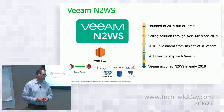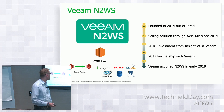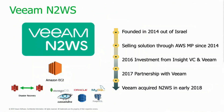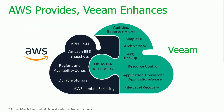N2WS was a company that Veeam acquired in early 2018. It was founded in 2014 out of Israel and is one of the leading solutions sold on Amazon's marketplace. They started partnering with Veeam to protect instances and sell through Veeam, and then Veeam decided to acquire the technology in 2018.